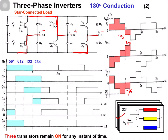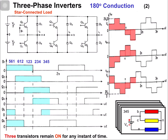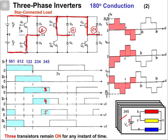The next switching state is 3, 4, 5 — switches 3, 4, and 5 are in the on state. Because of switch 3, phase B is connected with the positive terminal. Because of switch 4, phase A is connected with the negative terminal. Because of switch 5, phase C is connected with the positive terminal of the source.